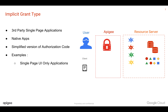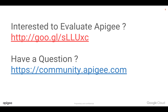Generally the application is a third-party single-page application trying to access your APIs. In future videos we are going to see how to implement these grant types in Apigee Edge and secure your APIs. Stay tuned for more videos, and if you have any questions please post them at community.apigee.com. Please share this video with your friends and colleagues and subscribe to the YouTube channel. Thank you for watching.